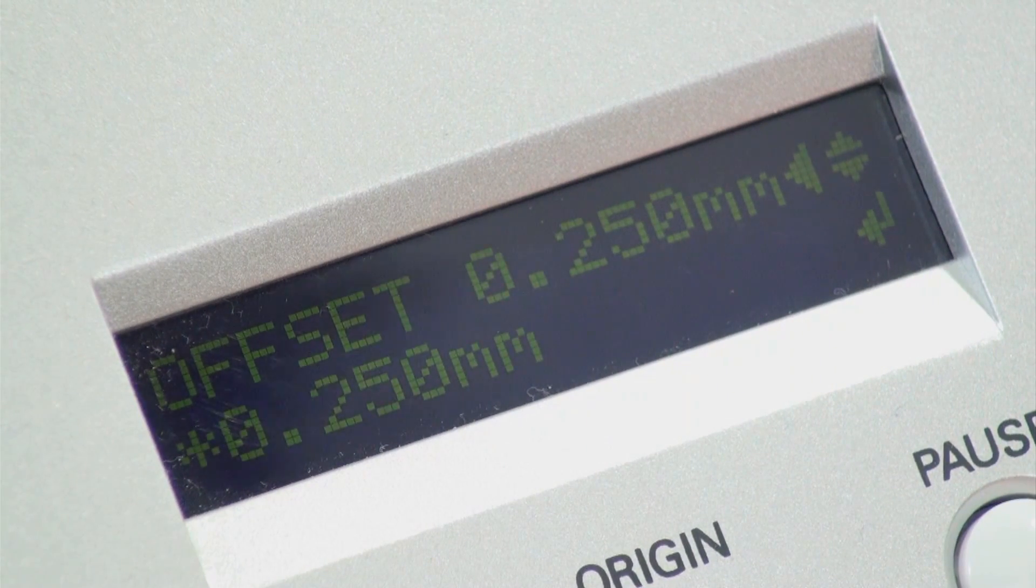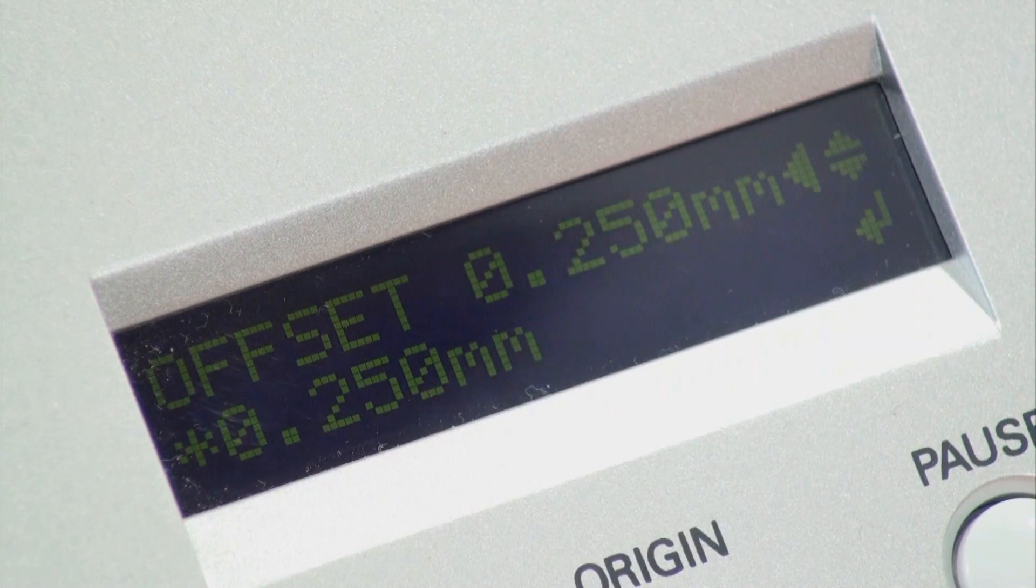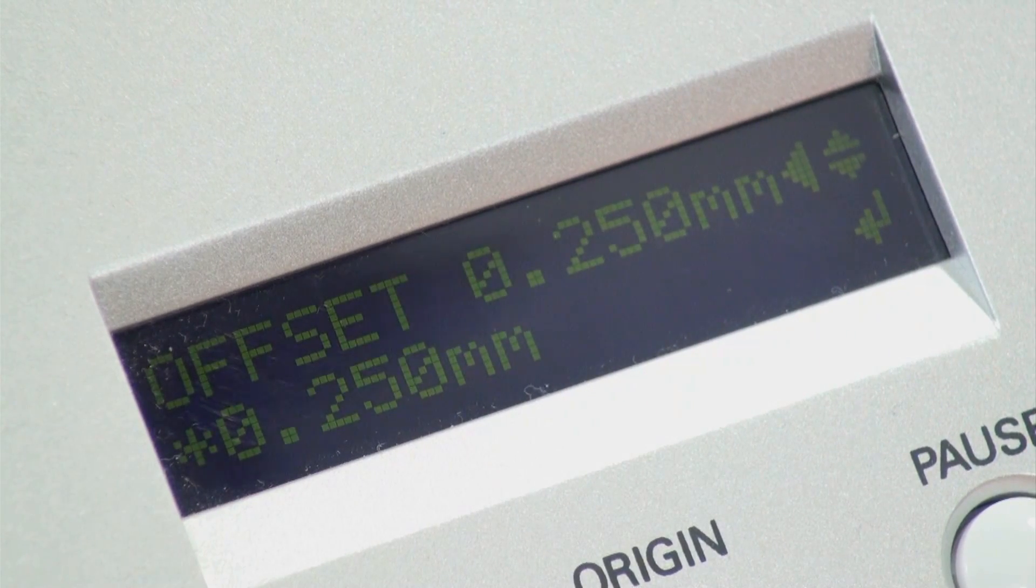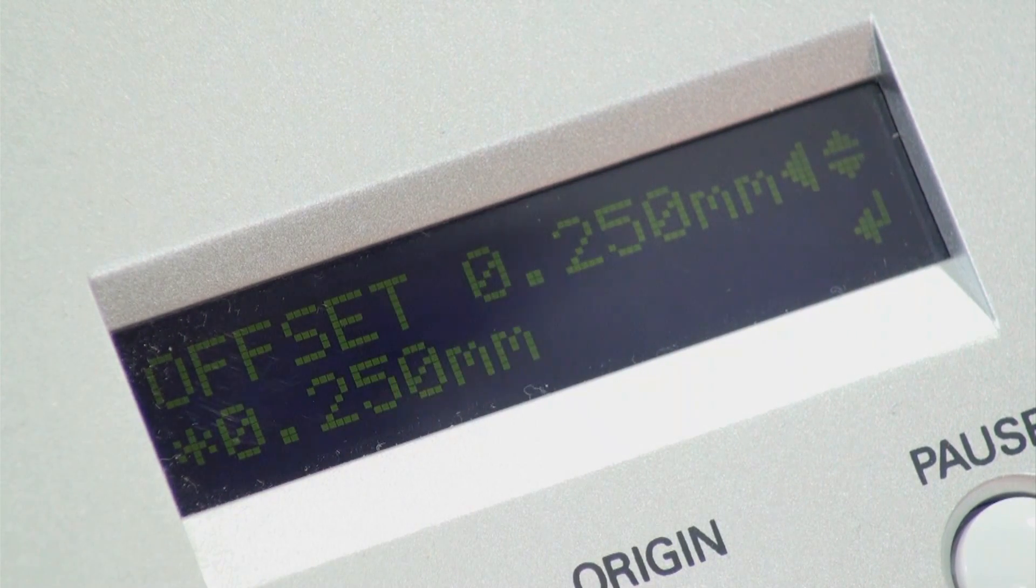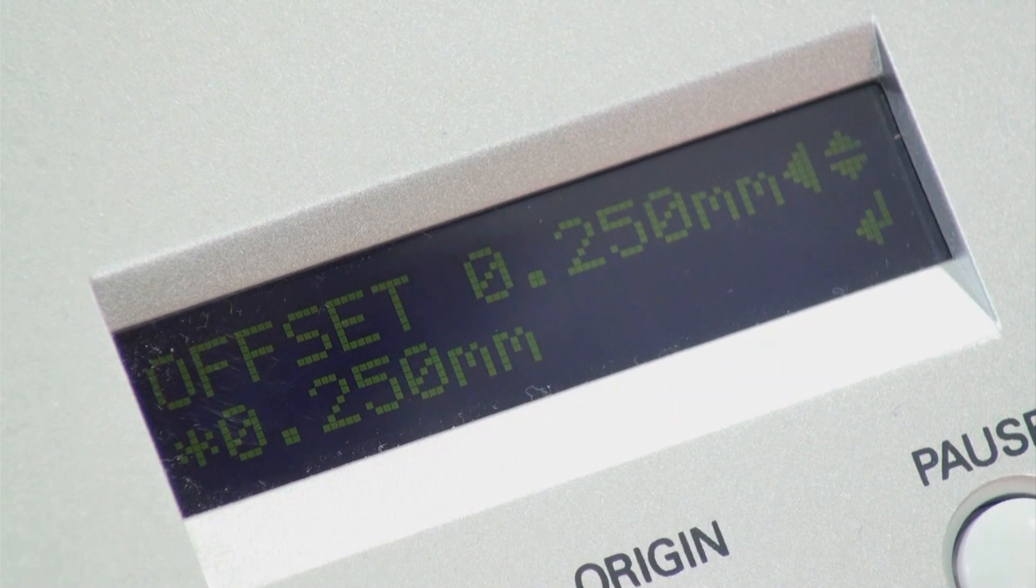But when I go into the setting on the Roland GX24, offset is always going to be a number between 0 and 1. So it's going to be a decimal. Right now it's 0.25. That's what Roland recommends for this 45 degree blade for standard thicknesses.